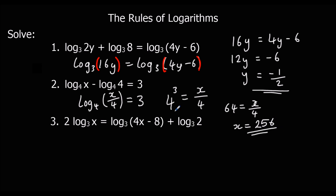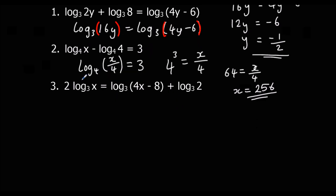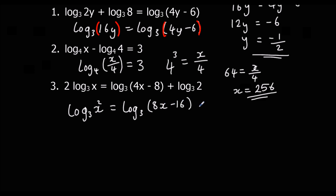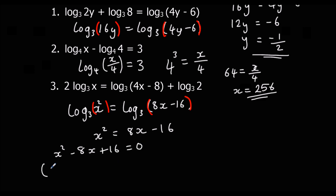Practice question three: jump the 2 up as a power to get log base 3 of x squared, then multiply the right side to get log base 3 of (8x minus 16). Since log base 3 is on both sides, x squared equals 8x minus 16. Rearranging: x squared minus 8x plus 16 equals 0, which factorizes as (x minus 4)(x minus 4), so x equals 4.